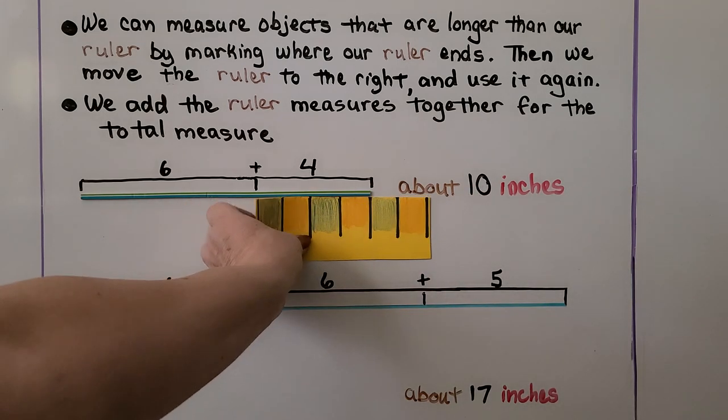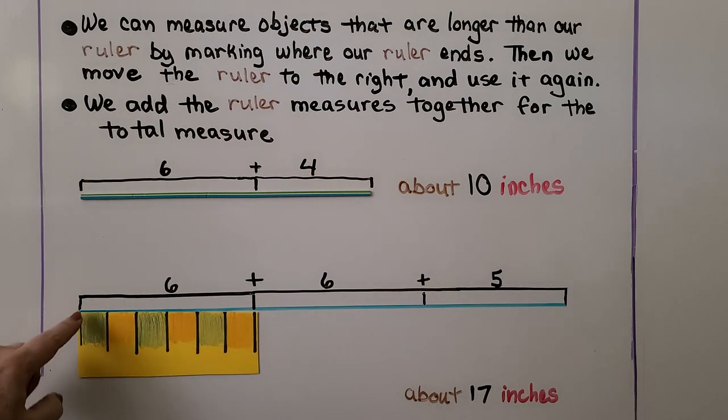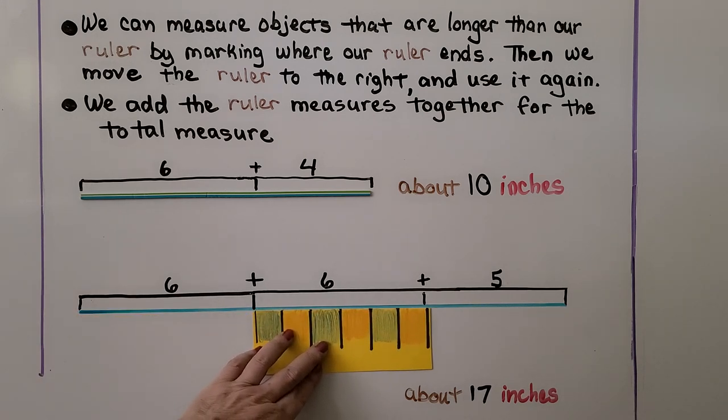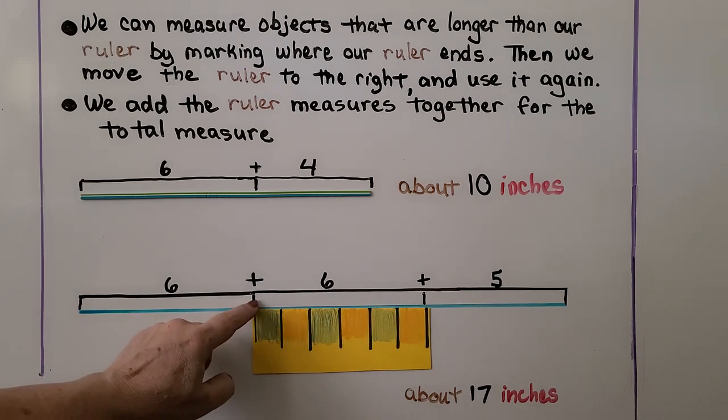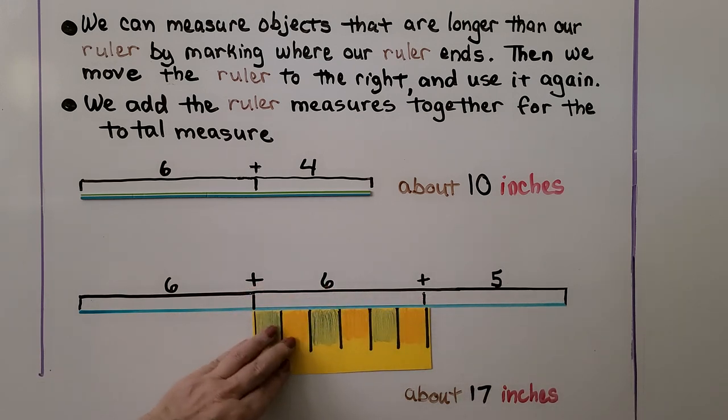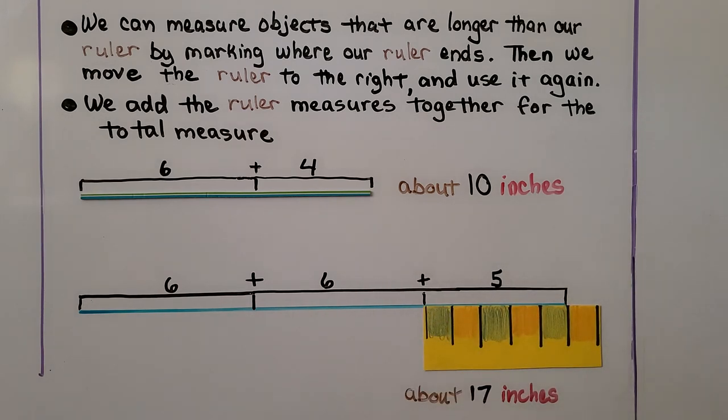We can measure this one. We line it up on the left side. We have six. We move it over and we line it up with our little mark here. That's another six. We mark it and then when we line it up we see we have a five and six plus six plus five is 17. So it's about 17 inches.